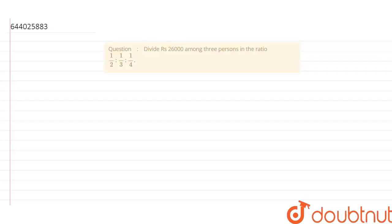Hello friends, so today our question is from ratio and proportion. And the question is divide 26,000 among 3 persons in the ratio 1 upon 2, ratio 1 upon 3, ratio 1 upon 4.